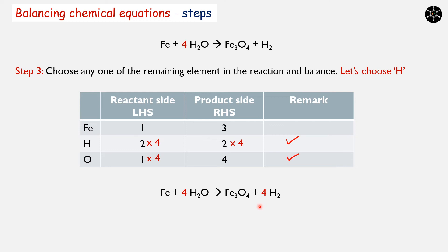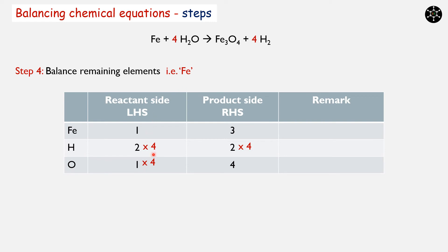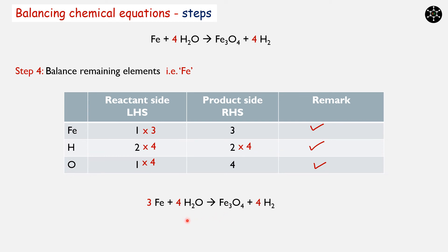Counting atoms again: LHS has 1 iron, 8 hydrogen, and 4 oxygen. RHS has 3 iron, 8 hydrogen, and 4 oxygen. Now only iron remains unbalanced. Step 4: Balance remaining elements — here it is iron. Oxygen: 4 on both sides — balanced. Hydrogen: 8 on both sides — balanced. For iron, we multiply LHS by 3. Iron is now also balanced. The balanced equation is: 3Fe + 4H₂O → Fe₃O₄ + 4H₂. All atoms on the left hand side are present in the same number as on the right hand side — the equation is balanced.